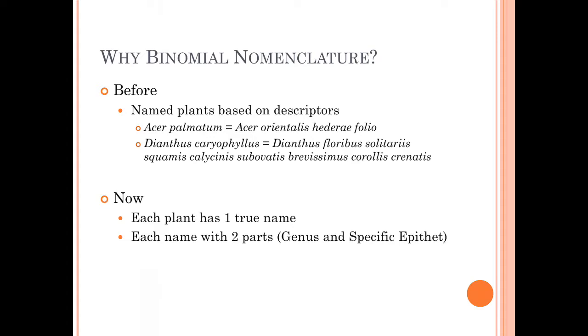What he looked at was prior to his invention of what we call binomial nomenclature, we would name plants based on their description. So Acer palmatum, which is Japanese maple, would be called Acer orientalis heteropholio. All right, that's four terms. That's not that bad. You know, maple, an oriental maple with ivy leaves. Okay, that's not so bad.